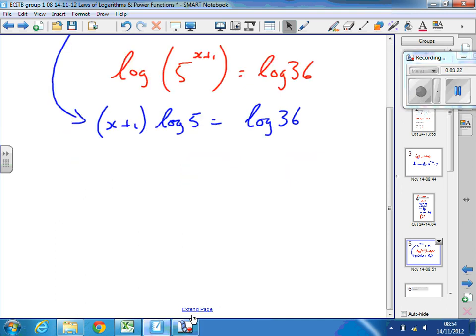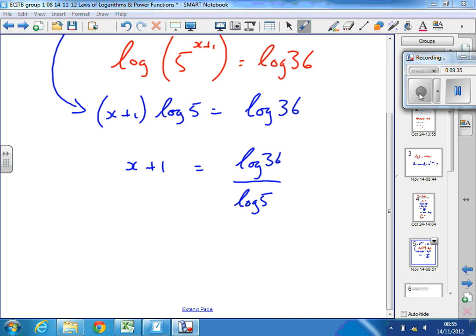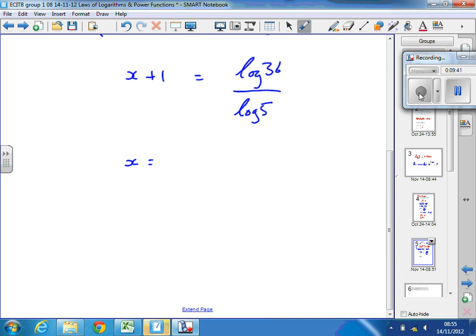Now divide both sides by log 5 and we get x plus 1 equals log 36 divided by log 5. Finally to get x, take away the 1. So, x equals log 36 divided by log 5 minus 1. And so, once we've found the logarithms to bring the power down, what we then do is what we'd normally do solving equations. Just subtract things to both sides, divide, multiply both sides by something to get x on its own. And then we can work out what that is and then put it back in to check.